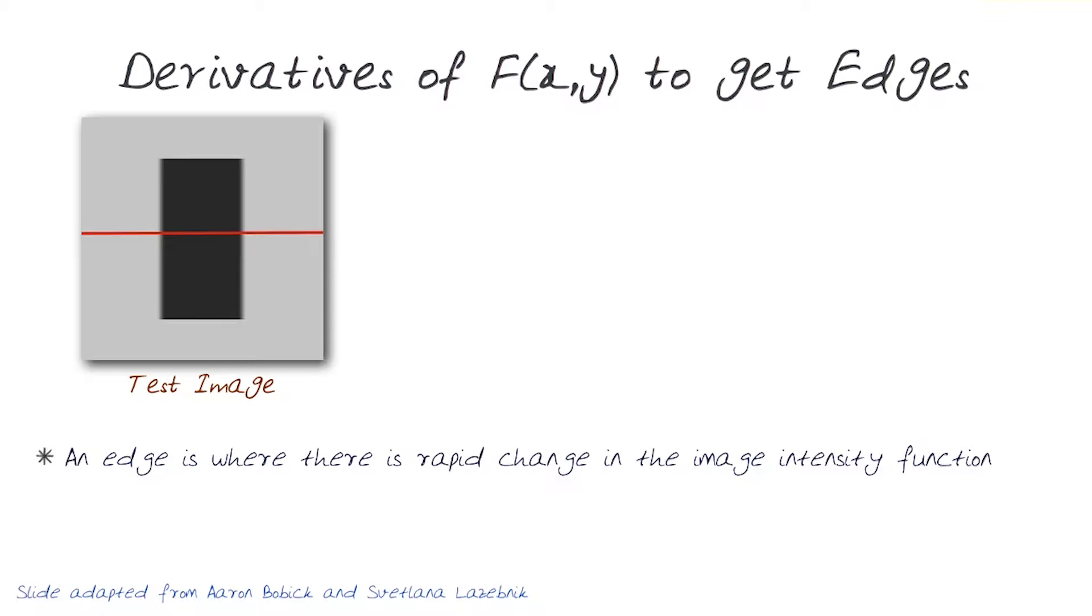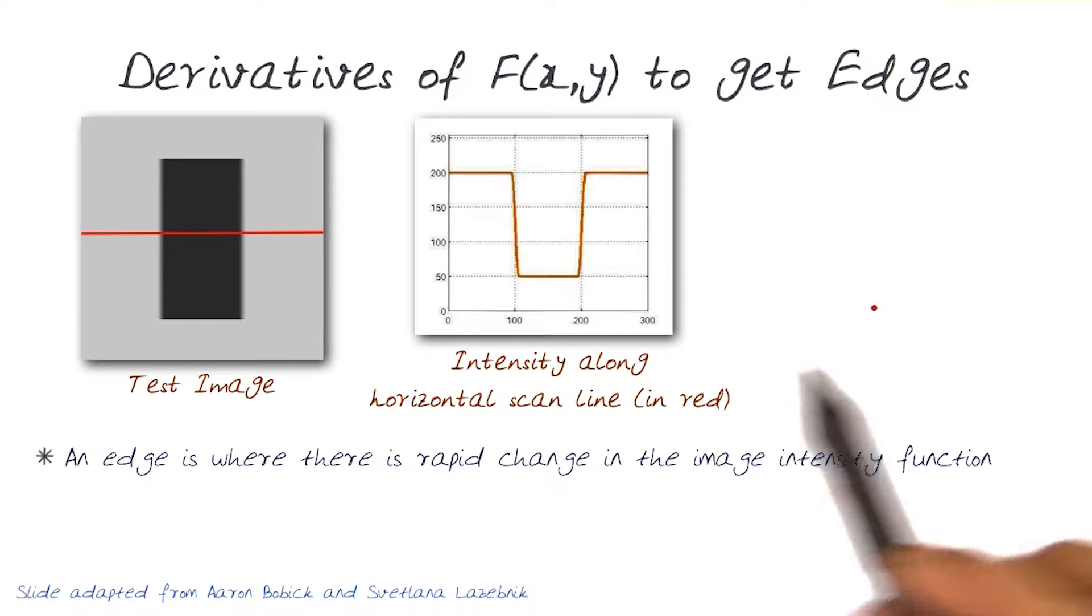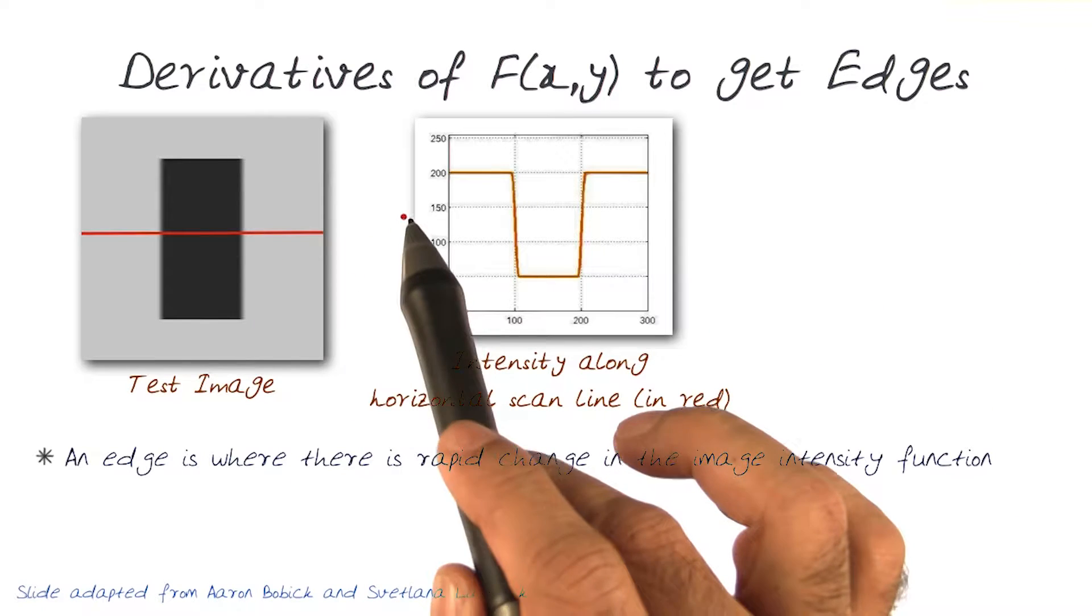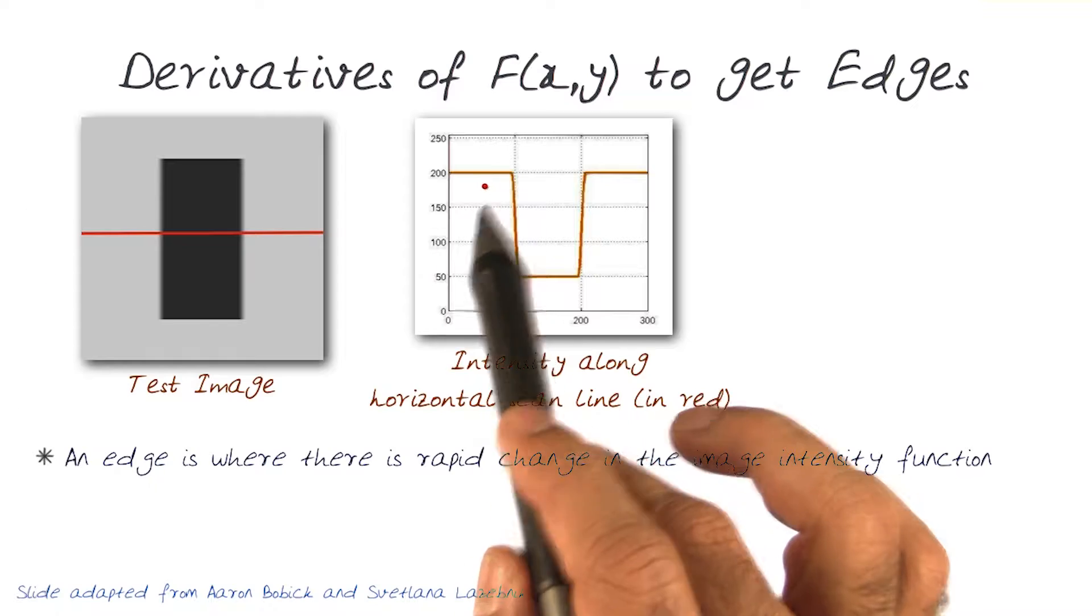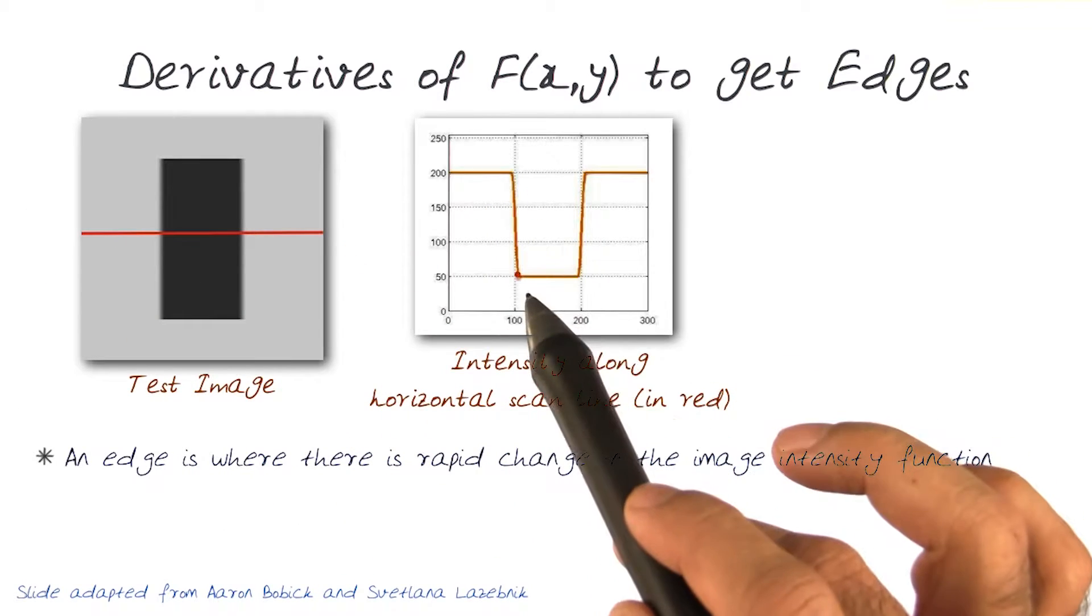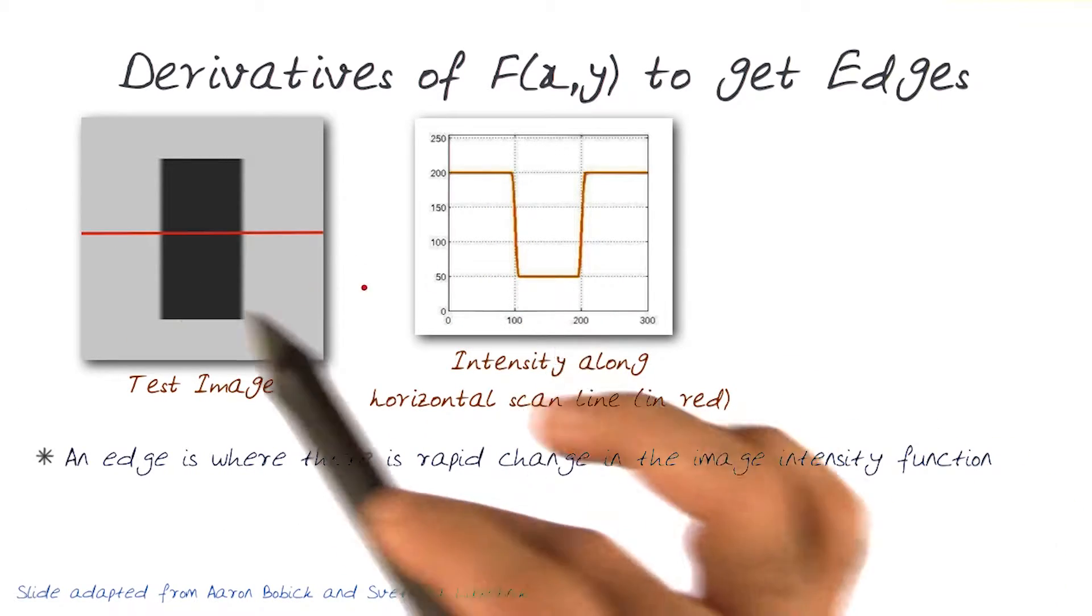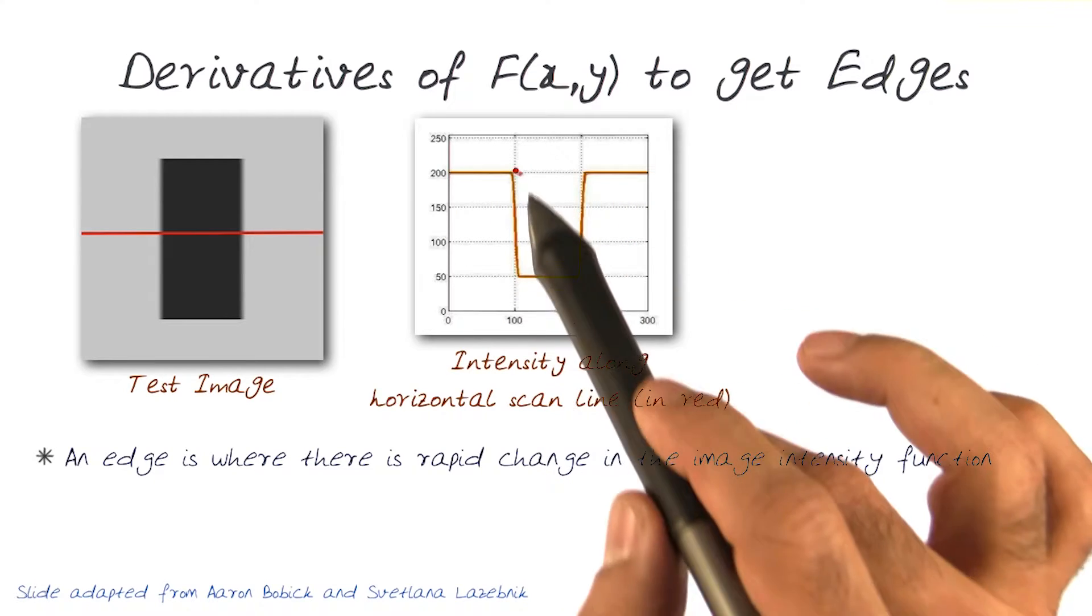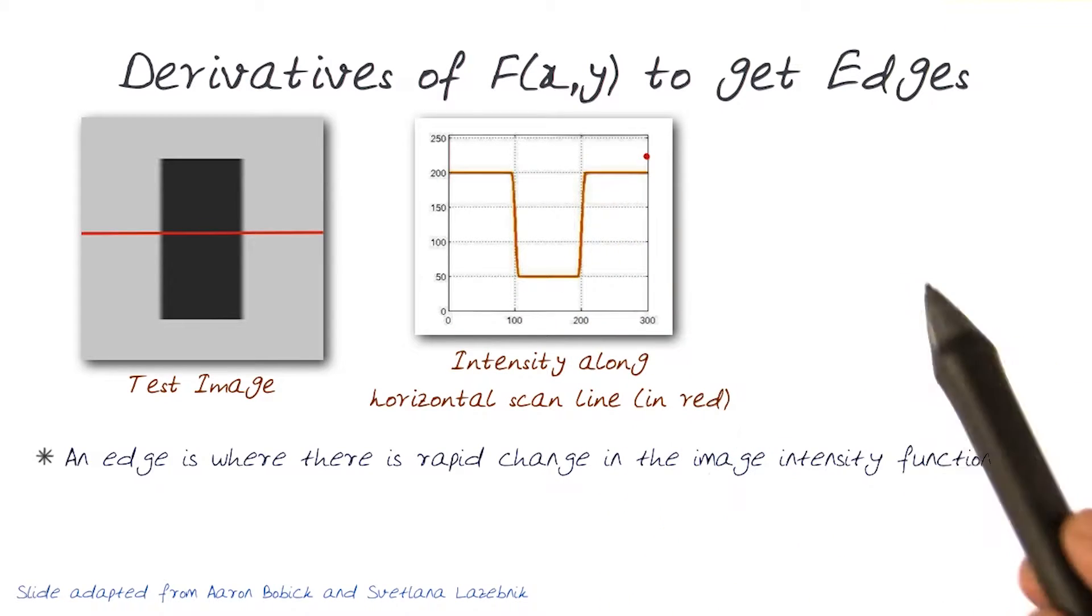And if I was to just construct the slice of this intensity, I would get this. So in essence, as I traverse through an image, the intensity is high where these gray values are, goes down to a little lower number where it's darker, and then comes back up. So this is the intensity map on this slice.